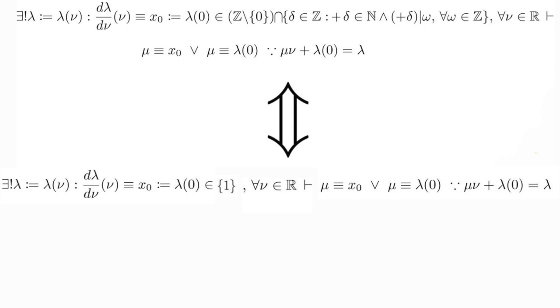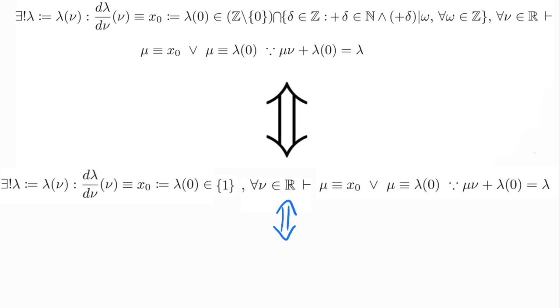However, if lambda of 0 belongs to a set containing only one element, then lambda of 0 equals this element, namely 1. Equivalently, we have.